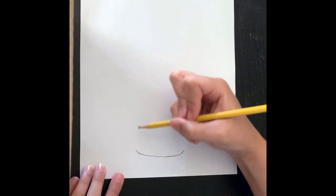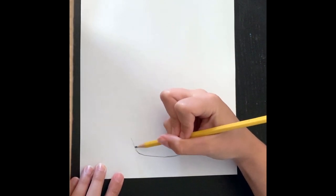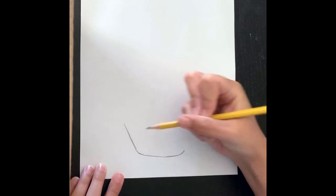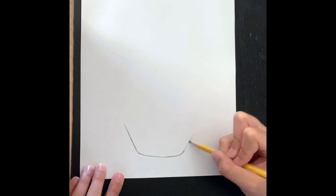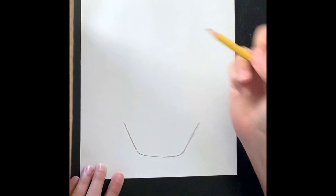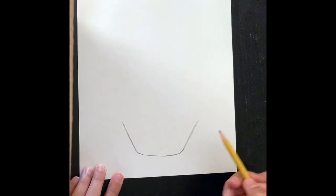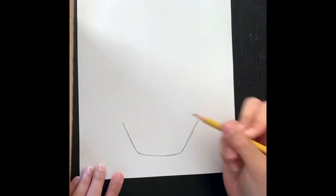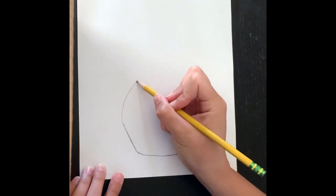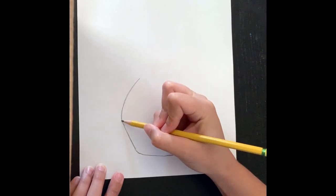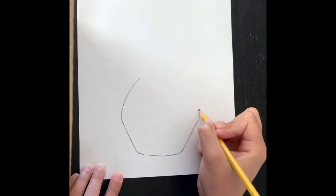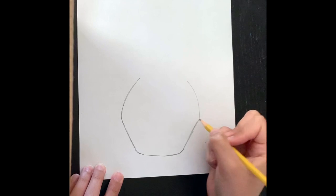And then from that curved line, we're bringing it up. Trying to make sure that those lines are even. And then we'll bring it in to show the vase curving in a little. Making sure we are as even as possible. It doesn't have to be perfect.